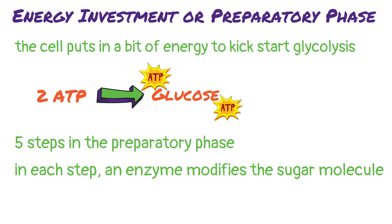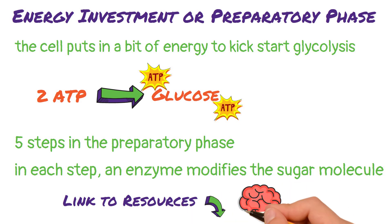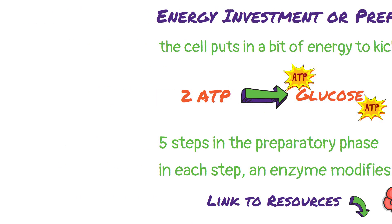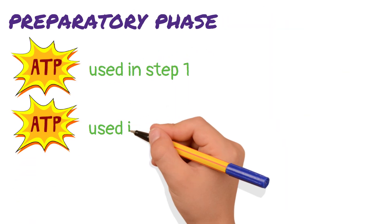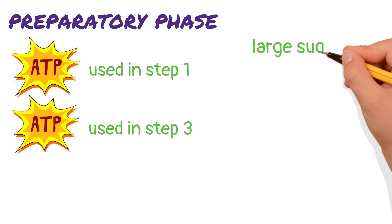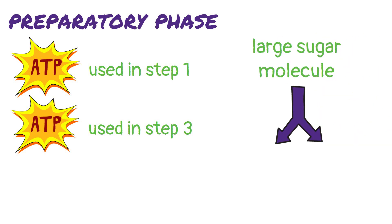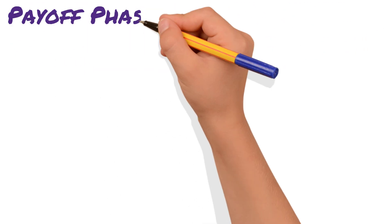I won't be going over each step in detail in this video, but we'll link to a resource in the description if you're interested — it is pretty fascinating. In this preparatory phase, an ATP is used in step 1 and an ATP is used in step 3. At the end of this phase, the larger sugar molecule is split into two smaller sugar molecules, setting us up for the second phase: the payoff phase.